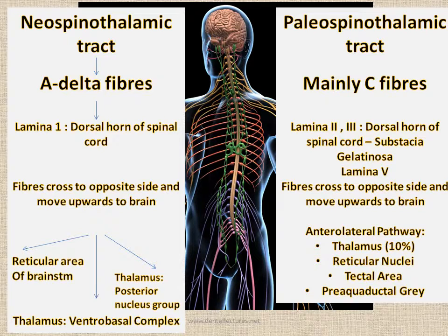On the other hand, the fibers of the paleospinothalamic tract first relay through lamina 2 and 3 of the dorsal horn of the spinal cord, and then to lamina 5, before crossing over to the other side and ascending towards the brain, thus forming the anterolateral pathway, whose fibers terminate at the thalamus, reticular nuclei, tactile area, and periaqueductal gray.